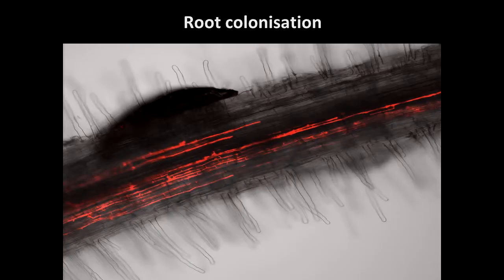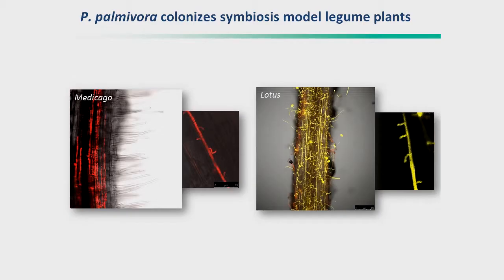Here comes my pathogen — Phytophthora palmivora, the one that eats everything, and it also likes to eat Medicago. This was actually a discovery that happened by chance in the lab, and when I found it I thought it had great potential to check all those symbiosis mutants. We can transform our Phytophthora species, introduce red fluorescent proteins, and trace its colonization in roots. It infects not only Medicago but also Lotus, another symbiosis model, forming little finger-like haustoria into root cells of both.